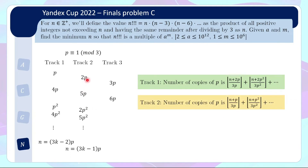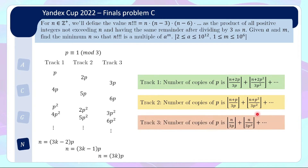Similarly for track 2, the number of copies of p is floor((n + p) / (3p)), and for multiples of p² in track 2 — which are 2p², 5p², and so on — you add p² and divide by 3p²: floor((n + p²) / (3p²)), and so on. For track 3, it's more straightforward: you divide by 3p directly to get multiples of p, by 3p² to get multiples of p², and so on. This is the rough idea of how you can find the number of copies of p to do your binary search. We'll discuss the efficient implementation shortly.